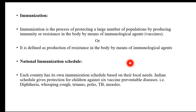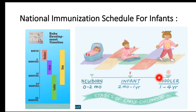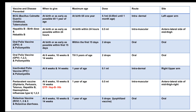Now, what is the national immunization schedule? Every country has its own immunization schedule depending upon local needs, that means depending upon the diseases prevalent. The Indian schedule gives protection for children against 6 vaccine-preventable diseases, and many more diseases are also being covered. We will now see the national immunization schedule for infants. There are different age sections — newborn till 2 months, and then up to 12 months for infants. We will see what all vaccines are covered from newborn to 1 year.